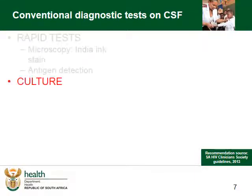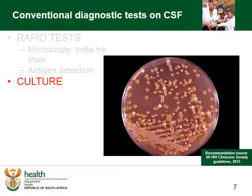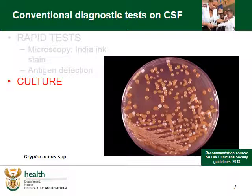Last but not least is the traditional culture. You can only grow Cryptococcus on a culture if you have live organisms, so it is the only test that can confirm live infection. It is positive within 72 hours but is not routinely done, as it is best to compare two different samples over a period of time. As you can test drug sensitivity on it, culture is only of use if you suspect antimicrobial resistance.